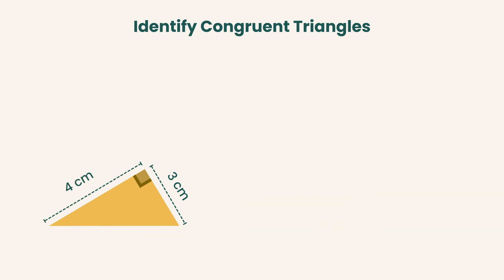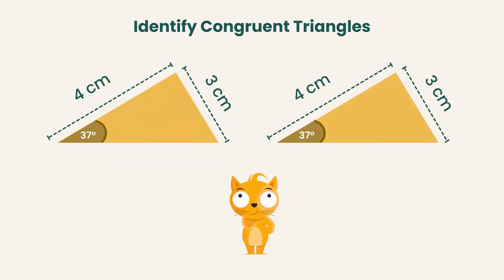You might wonder, what if the non-included angle isn't a right angle, like here? Can you still tell whether the two triangles are congruent? The answer is no, because given this information, you could form different triangles.